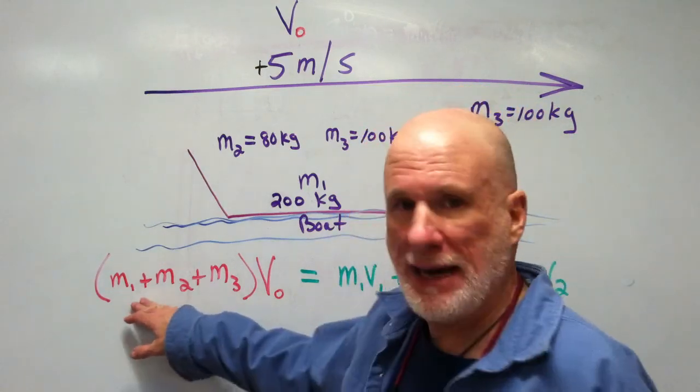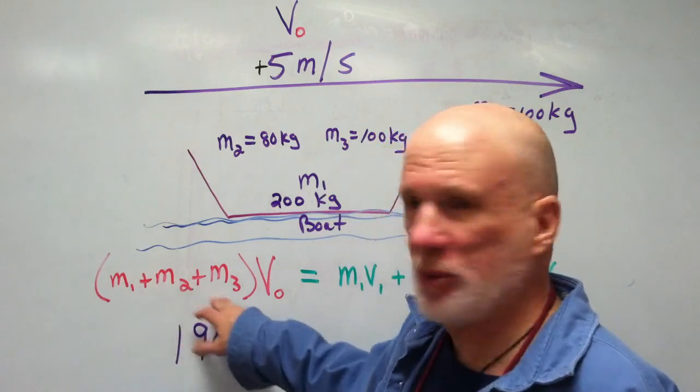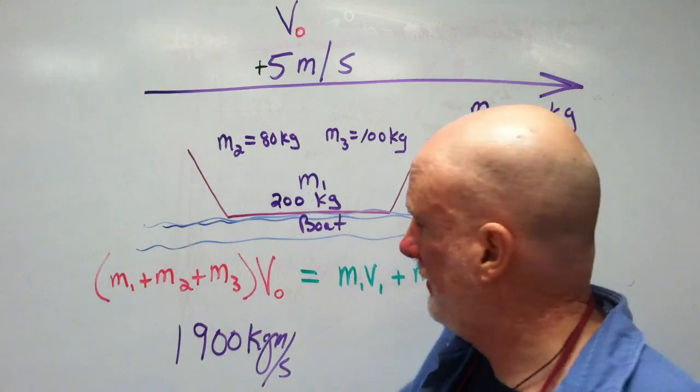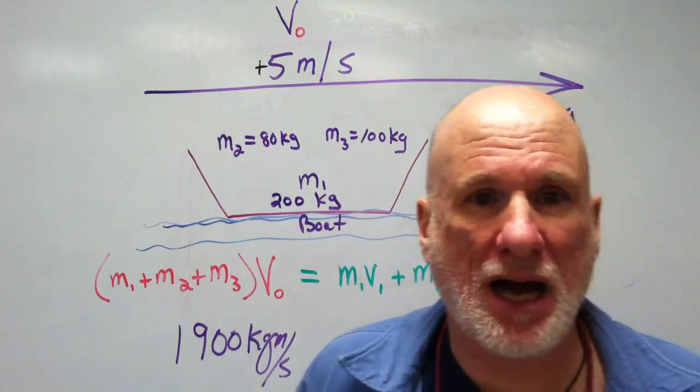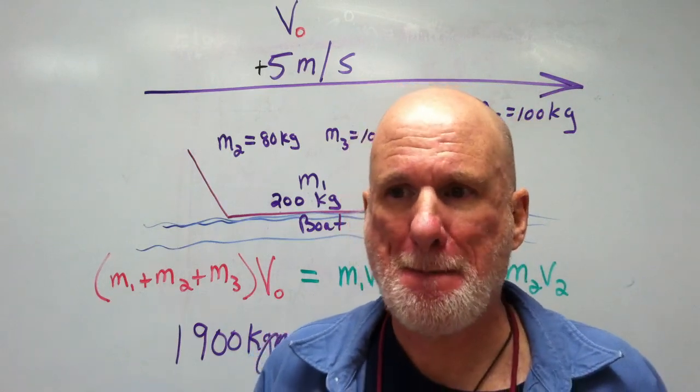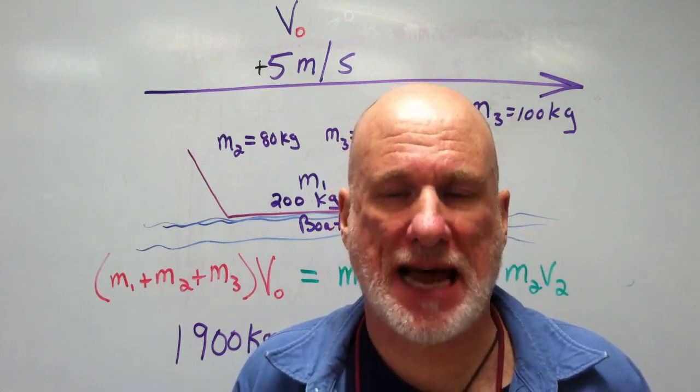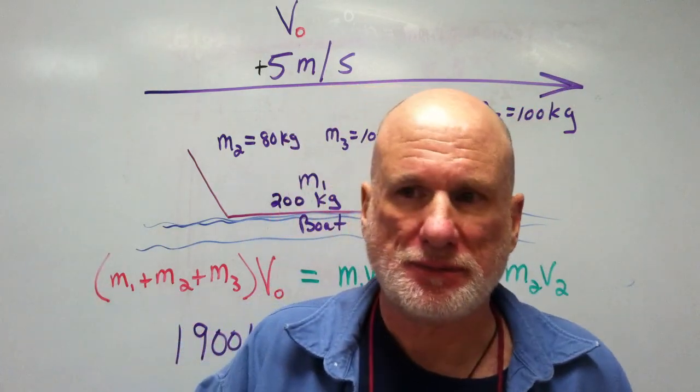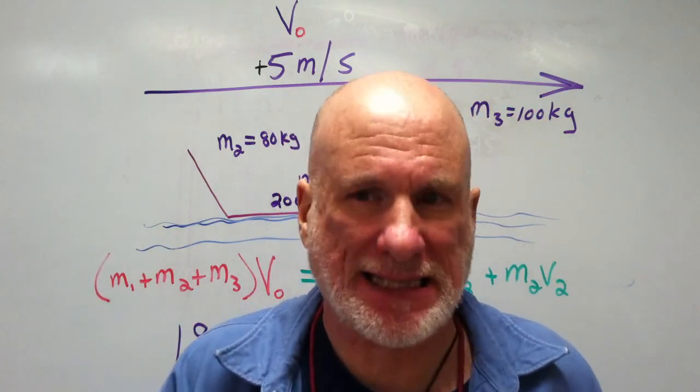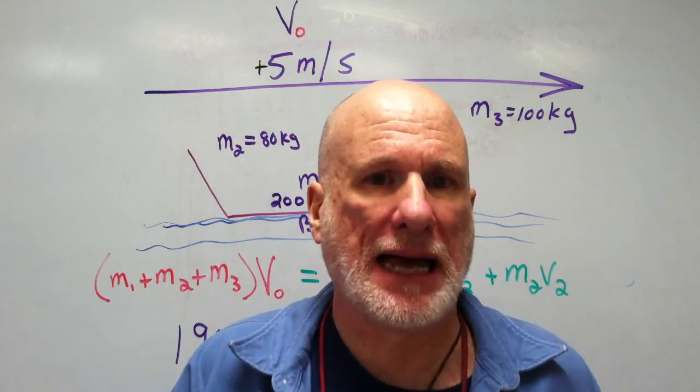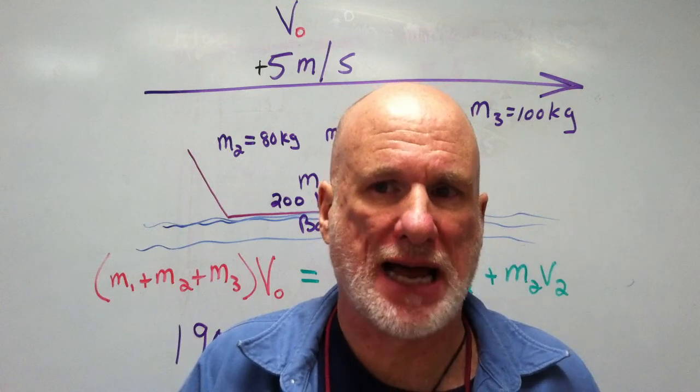So M1 plus M2 plus M3 times the velocity of 5 equals 1900 kilogram meters per second. That's the momentum that that boat possesses while it's on the lake going 5 meters per second.